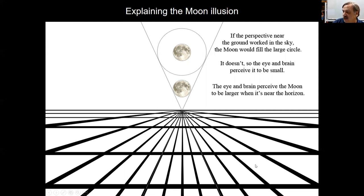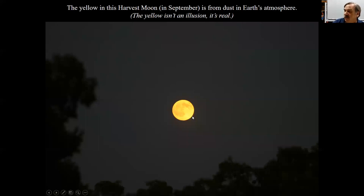If the perspective near the ground worked for the sky, notice that I've drawn some lines for perspective. And if this worked in the sky, the moon would fill the large circle. It doesn't. So the eye and the brain perceive the moon high in the sky to be smaller than it is when it's low in the sky. Therefore, the moon illusion. The yellow in this harvest moon in September is from dust in Earth's atmosphere, which we get lots in Fresno. The yellow isn't an illusion. It's real.